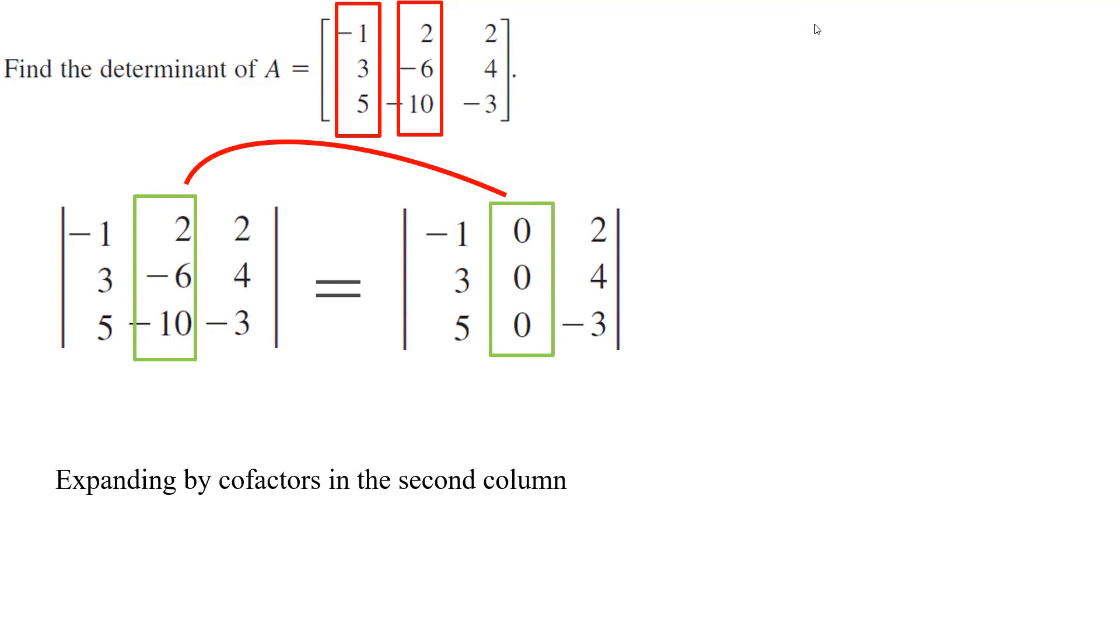You can expand by cofactors in the second column. Remember the definition of cofactor C_ij is negative 1 to the power i plus j times the determinant of A_ij.